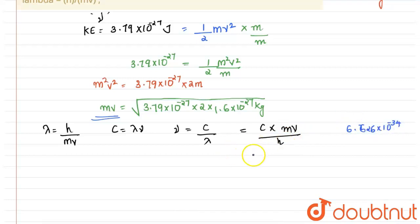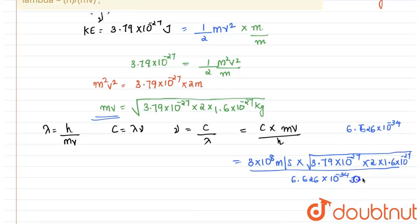So when we substitute these values, we will get it as c as 3 × 10^8 m/s multiplied by √(3.79 × 10^-27 × 2 × 1.6 × 10^-27), all divided by h. Here the value of h is 6.626 × 10^-34 joule second.